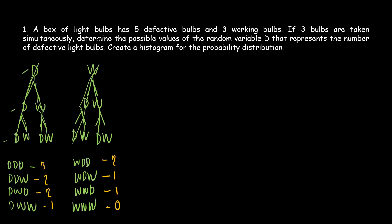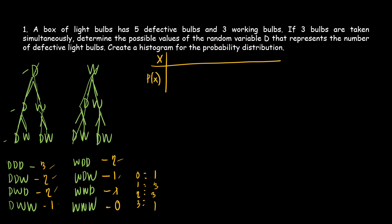So for D equals 0, 1, 2, and 3 we count how many outcomes give each value. For 0 defective there is 1 outcome, for 1 defective there are 3 outcomes, for 2 defective there are 3 outcomes, and for 3 defective there is 1 outcome. Now we make a table with x and P of x, listing values 0, 1, 2, and 3.